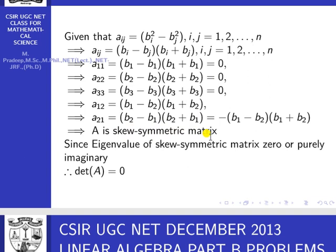Do you know the properties of a skew-symmetric matrix? The eigenvalues of a skew-symmetric matrix are either 0 or purely imaginary. In particular, for odd order skew-symmetric matrices — when n is an odd number — one of the eigenvalues must be 0. The eigenvalues are either 0 or purely imaginary, no real numbers.